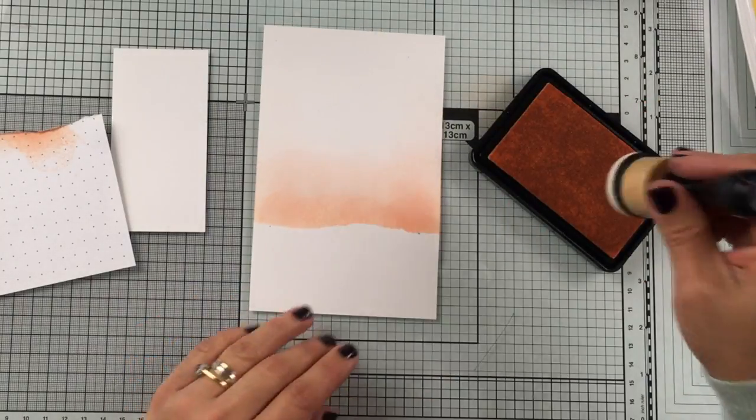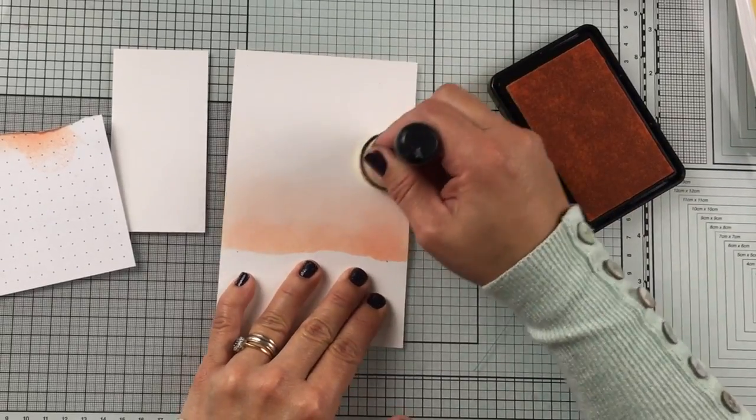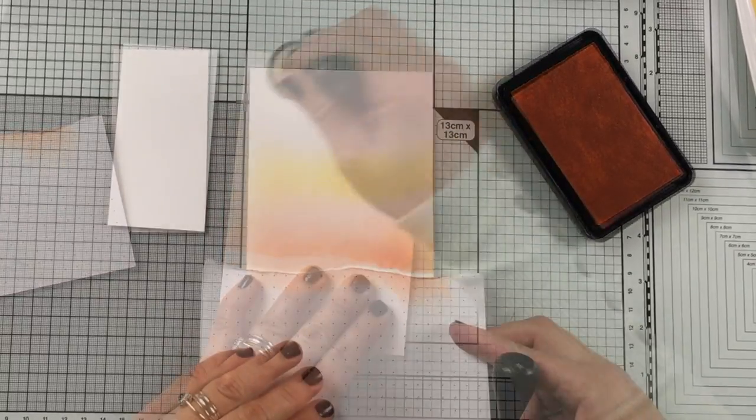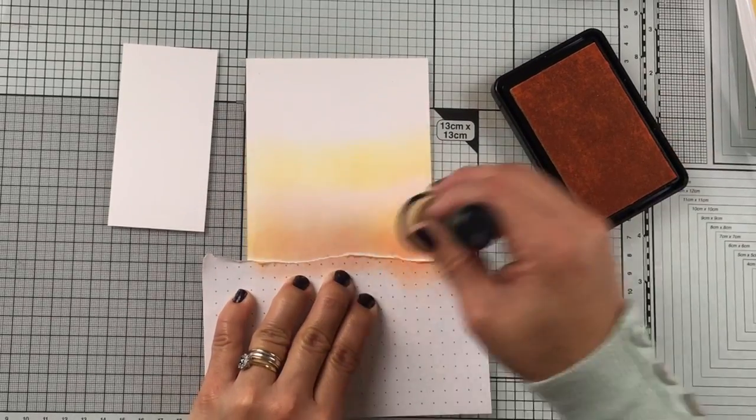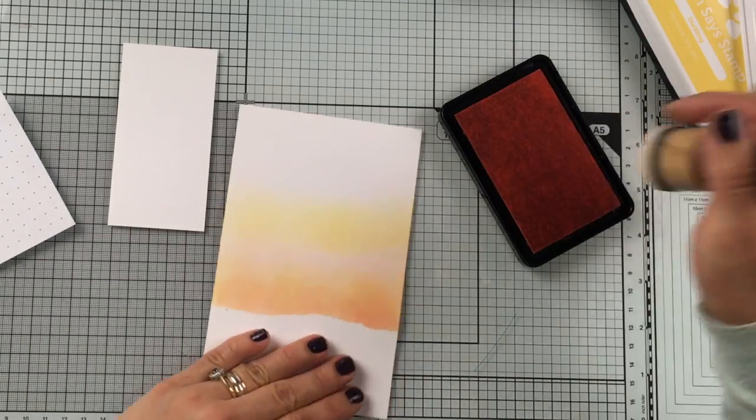So I'm going to use here Duckling which is a yellow ink, and I'm not applying any strain or any pressure on the paper. I'm sorry because my table was moving all around, so I'm just going very soft and slow. With these inks I'm trying to create a sunset.